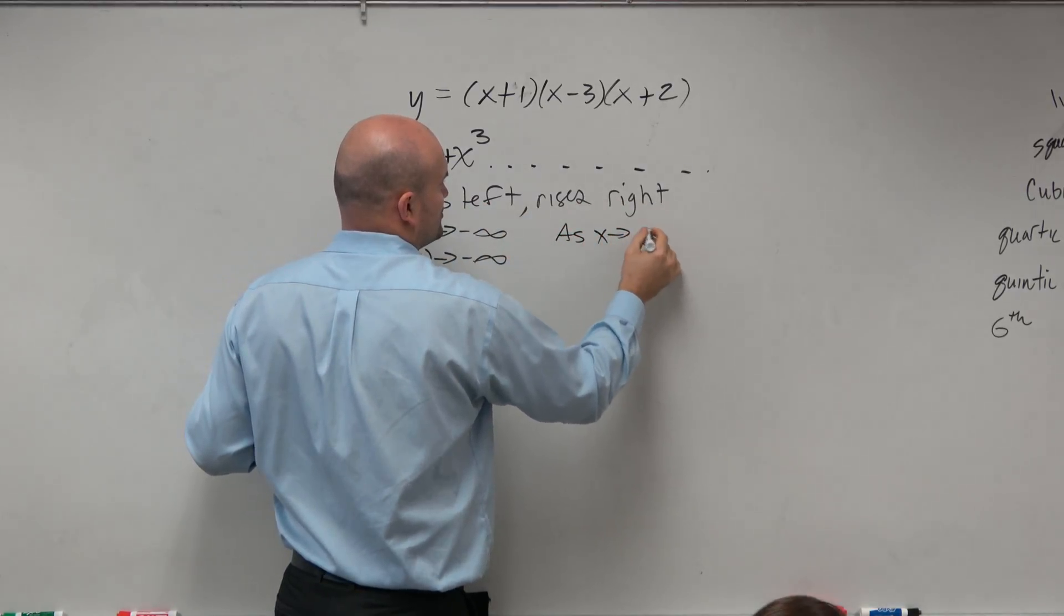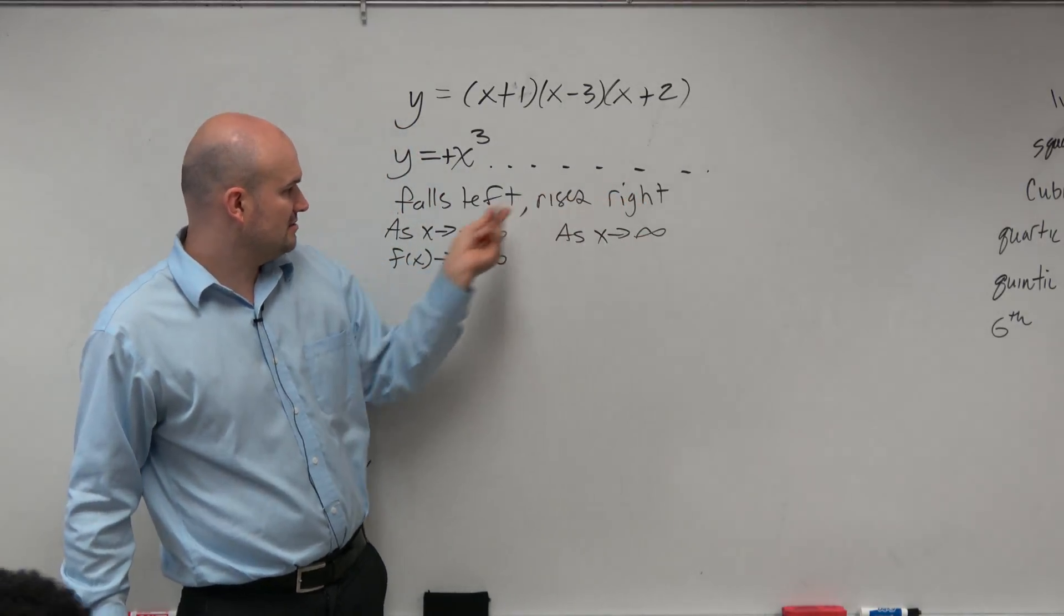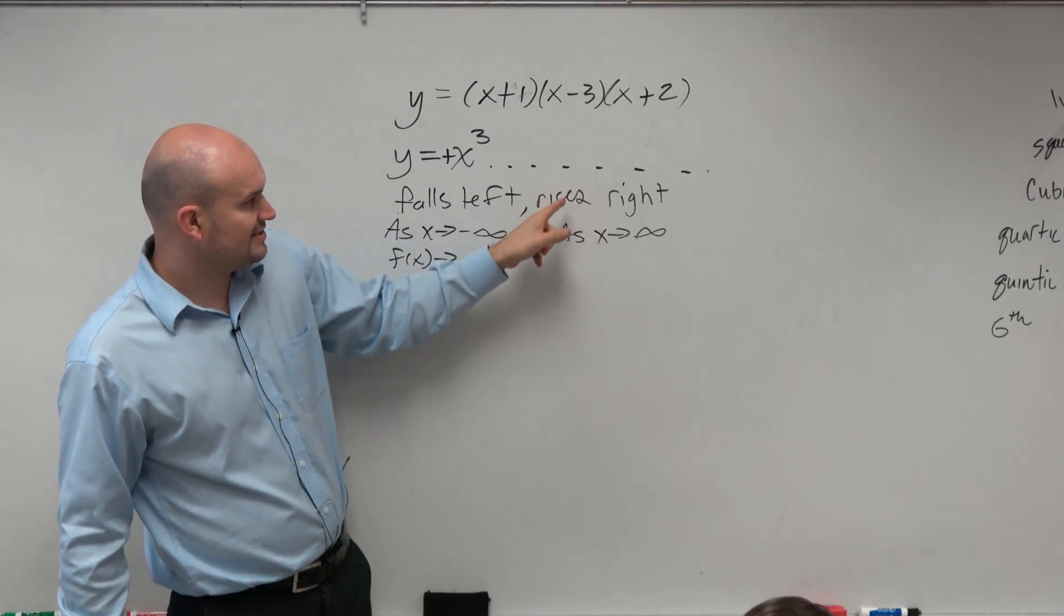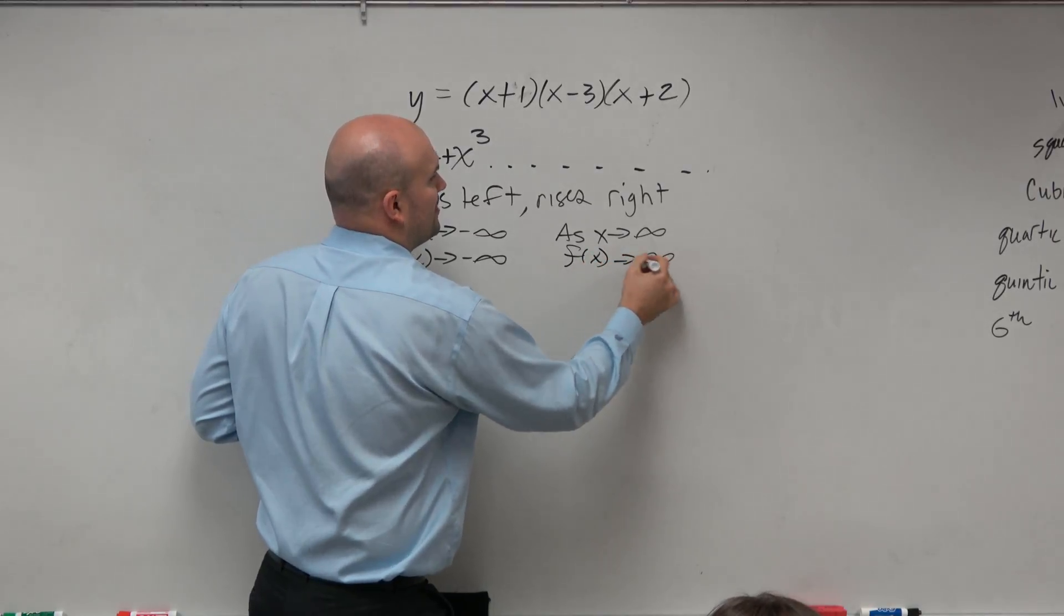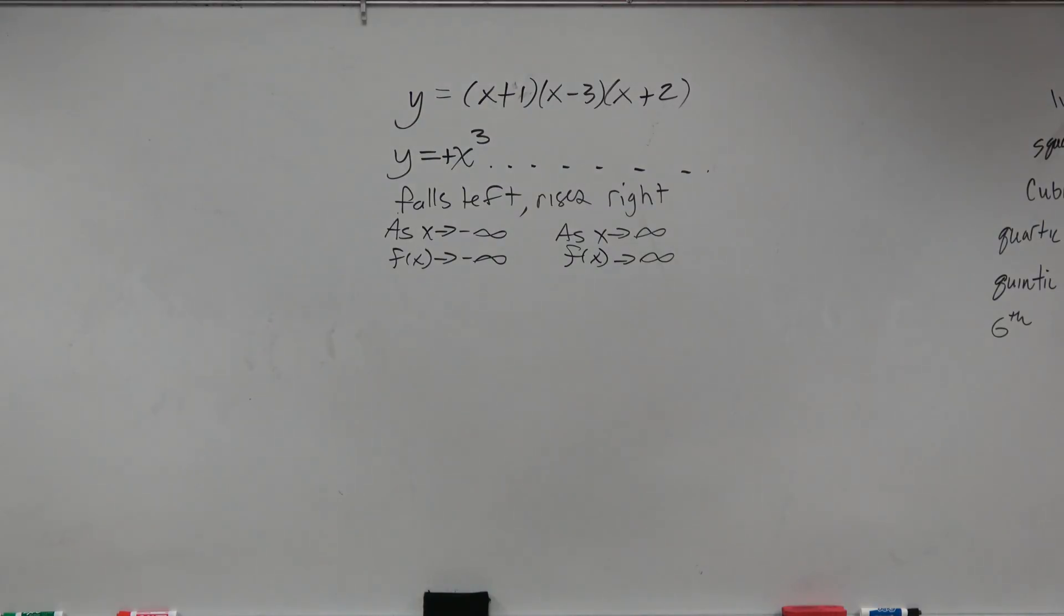You guys agree, x goes to infinity is going to the right, and x goes to negative infinity is going to the left. Would you guys agree with that? So if it's rising, that means f of x is going to positive infinity.